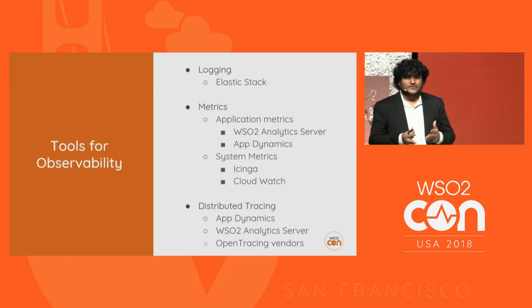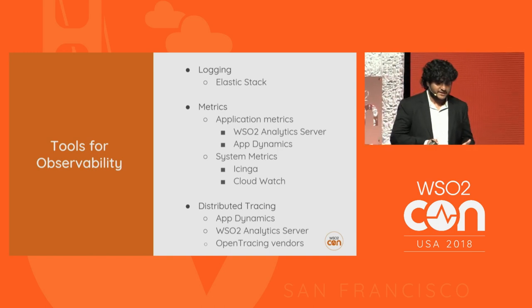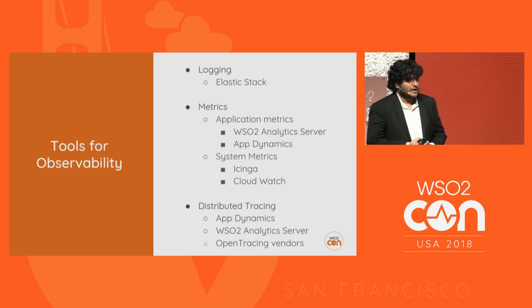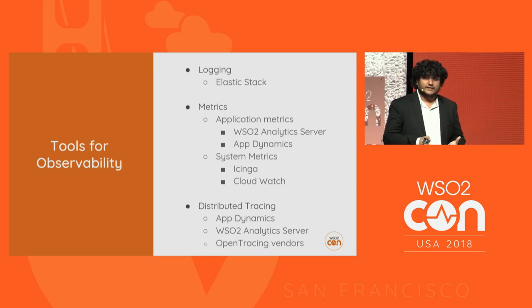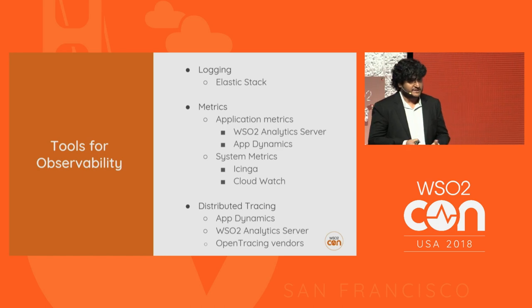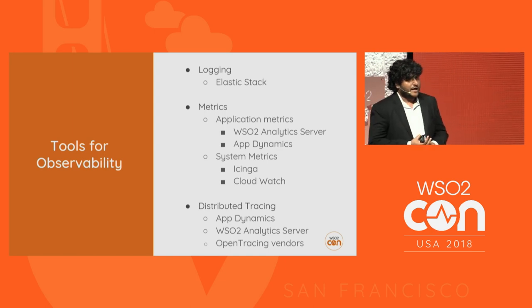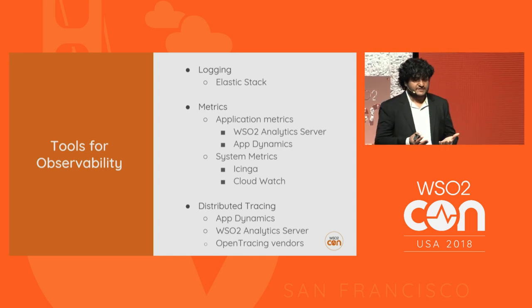Let's look at some of the tools we use for observability at WSO2. For logging, the Elastic Stack is a very famous stack. In metrics, we have two categories: application metrics, using the WSO2 Analytics Server or commercial products like AppDynamics; and system metrics, using Icinga and CloudWatch for AWS. For distributed tracing, we use AppDynamics, the WSO2 Analytics Server, and other open tracing vendors. Open tracing is basically a standard for tracing with multiple vendor implementations.